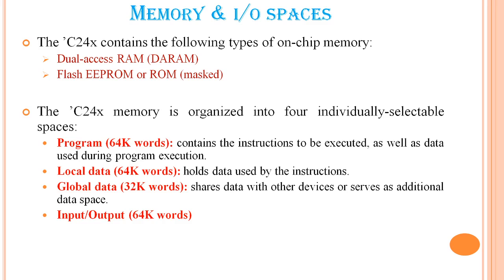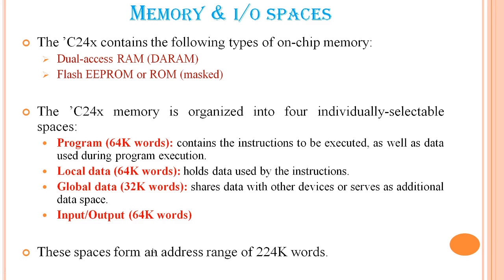One is the program memory, which is 64K words. Then local data, again 64K words. Global data is 32K words, and then input-output space, which is 64K — it shares data with other devices or serves as additional data space. The overall all spaces form an addressing range of 224K words.